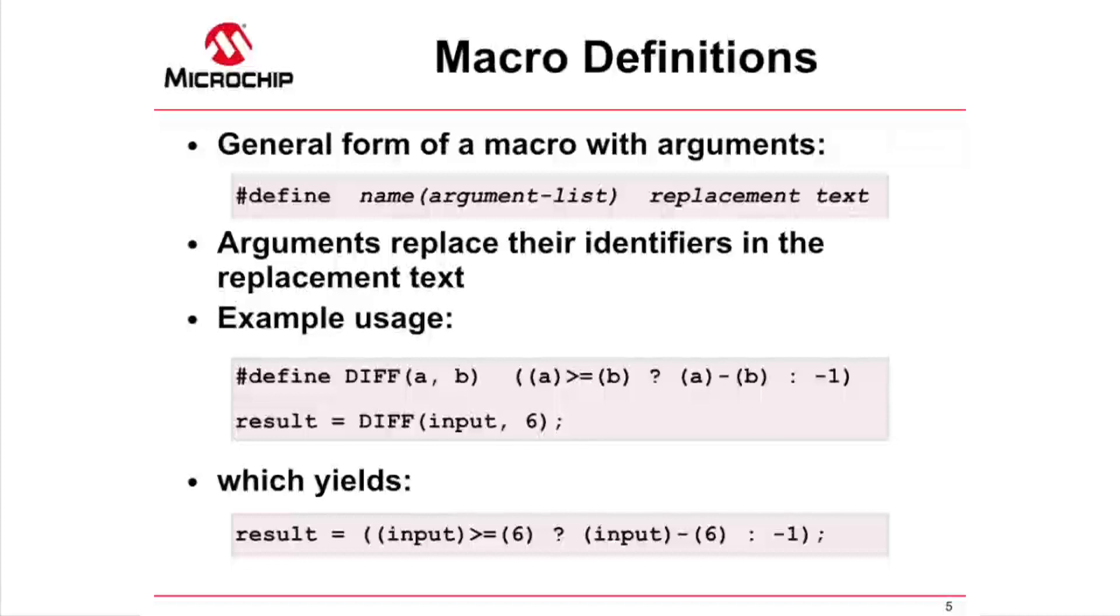The example shows a macro diff, which has two arguments, called a and b, and which evaluates the difference between these, unless that would be negative, in which case it evaluates as negative 1. To prevent any nasty side effects in the expansion, each argument in the replacement text is enclosed in brackets. This is highly recommended at all times. The lower box shows the result after preprocessing. In this case, input is a C variable that will be evaluated in the statement.